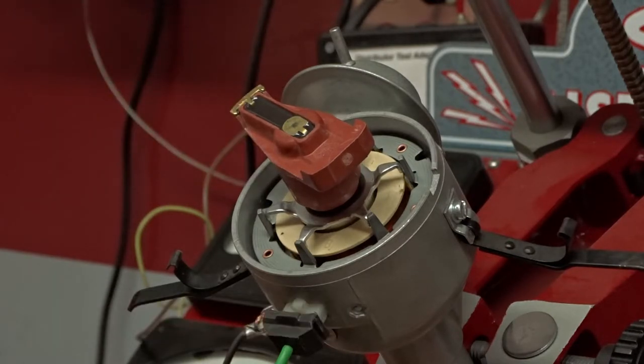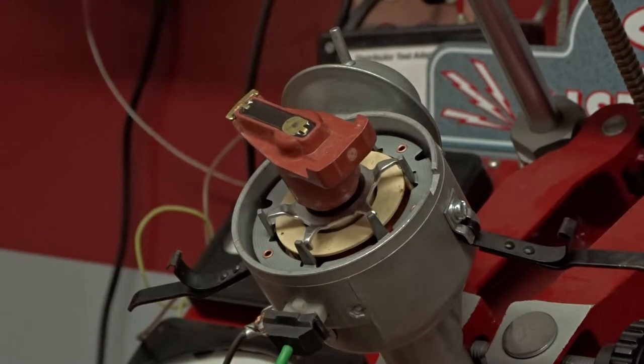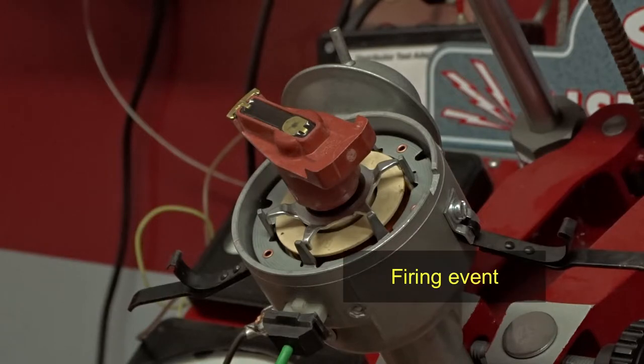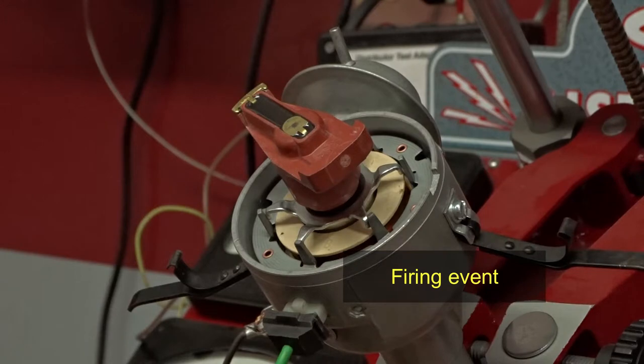On a counterclockwise rotating distributor, the firing point will be just kind of to the right of the post if you're looking at it. On a clockwise rotating distributor, it's going to be just slightly to the left of the post.